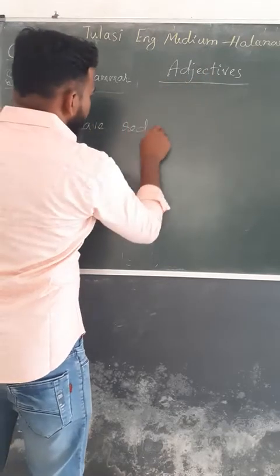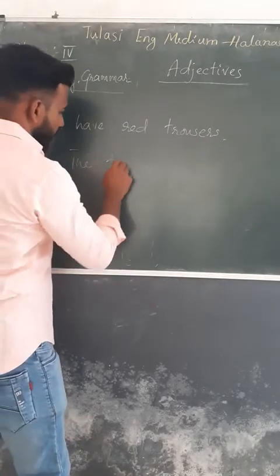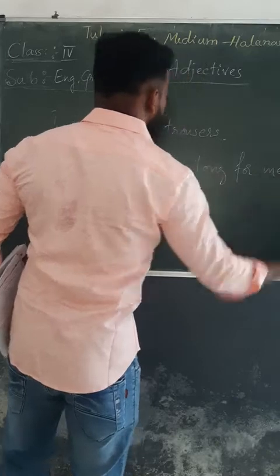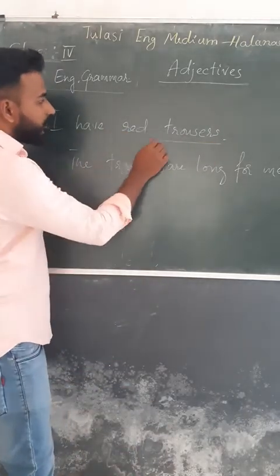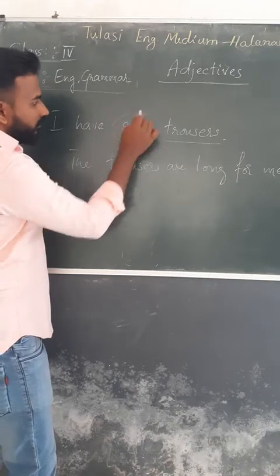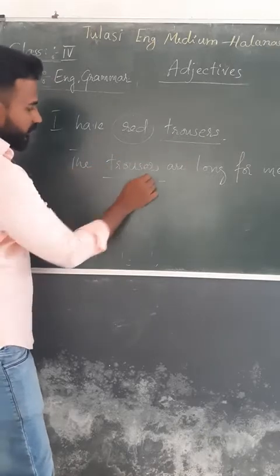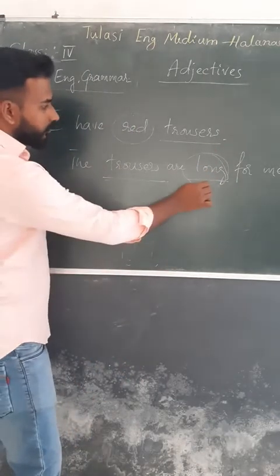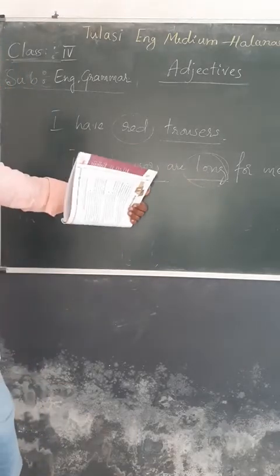For example: 'I have read promises, the promises are long for me.' Here 'precious' is an adjective used before a noun — that is before the noun. 'Long' appears later in the sentence after the noun. So an adjective may come before the noun or later in the sentence, sometimes after the noun.